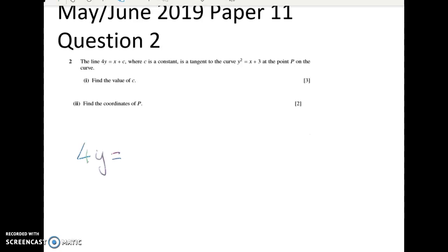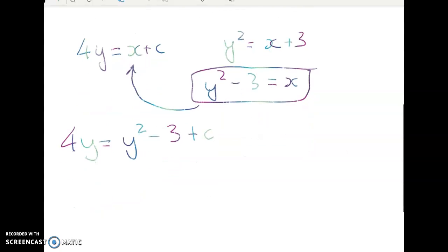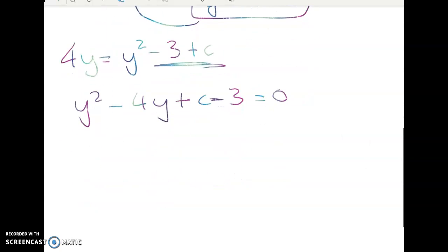We've got 4y is equal to x plus c and we've got y squared is equal to x plus 3. So we've got a set of simultaneous equations y squared minus 3 is equal to x from this one. So I'm going to substitute that in here and I get 4y is equal to y squared minus 3 plus c. So y squared minus 4y plus c minus 3 is equal to 0. So I've got a quadratic.